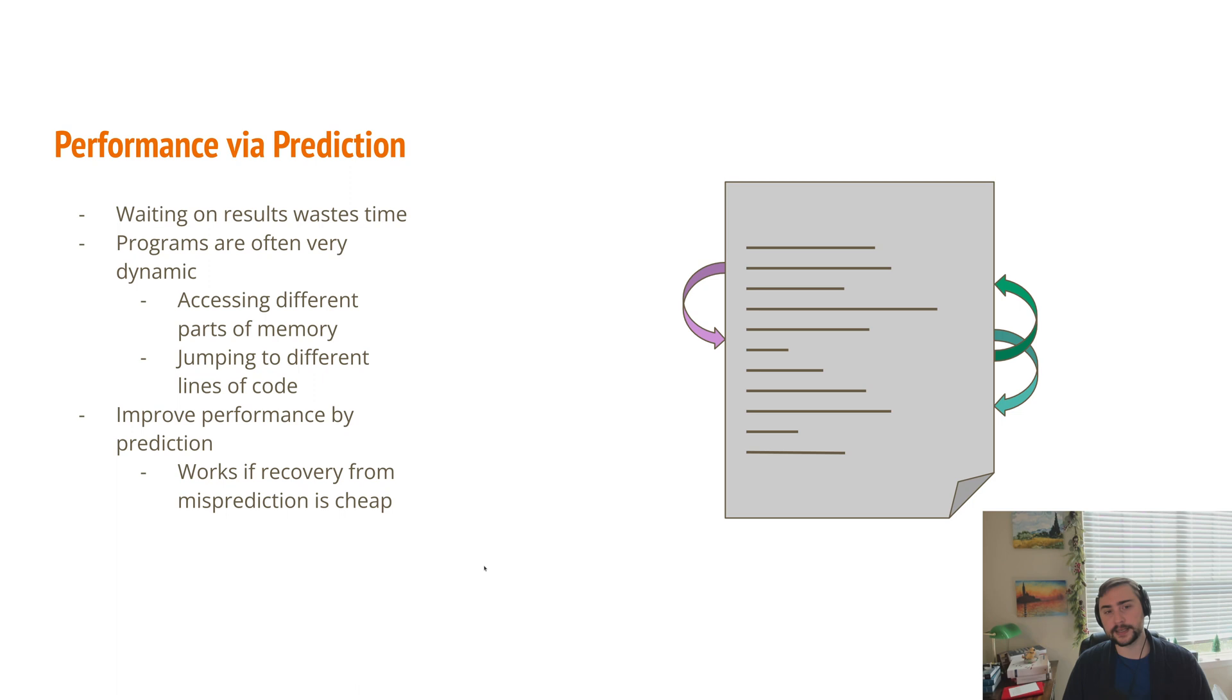So another way we can get performance is through prediction. Now, very obviously, waiting on results wastes time, and it wastes our resources. And our programs happen to be very dynamic. So we're often accessing different parts of memory. We're not just going down a line and reading our entire system of memory.